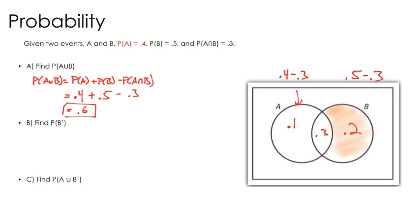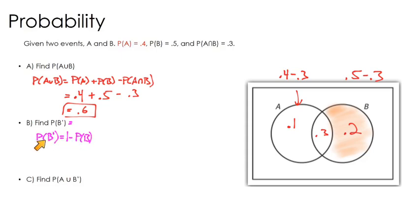Now, let's look at the probability of B prime. What we've established is that the probability of B not happening is 1 minus the probability of B happening. Using the term B complement: the probability of B complement is 1 minus the probability of B.